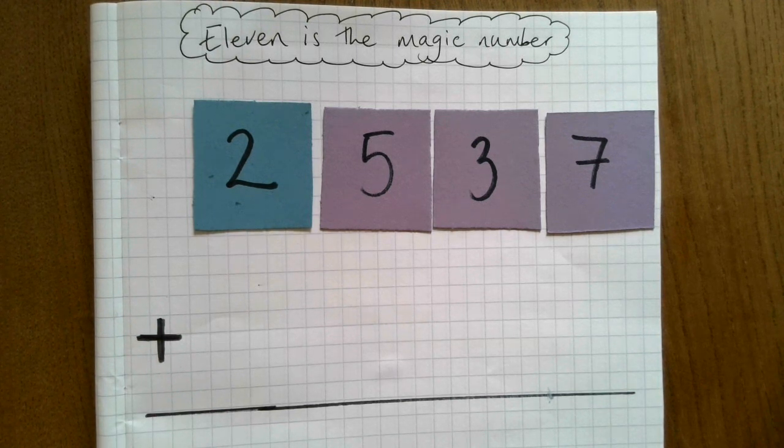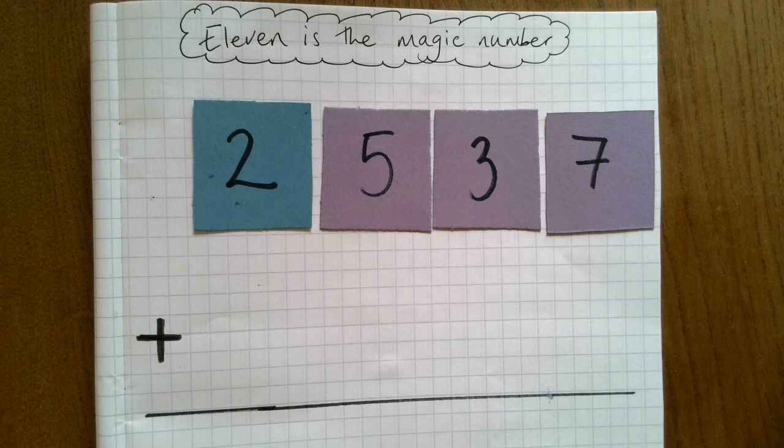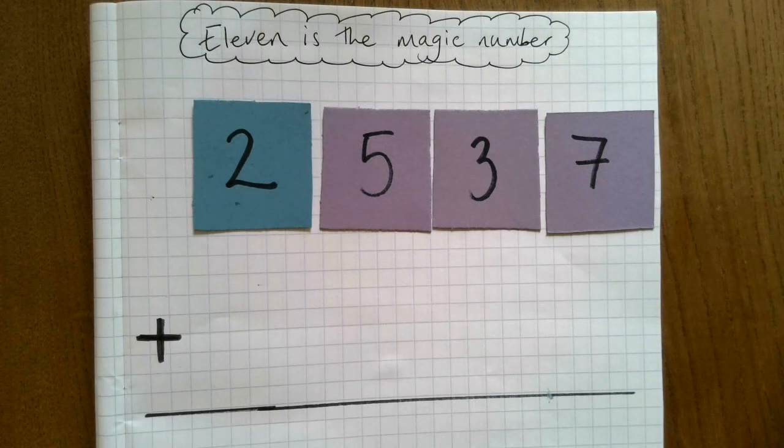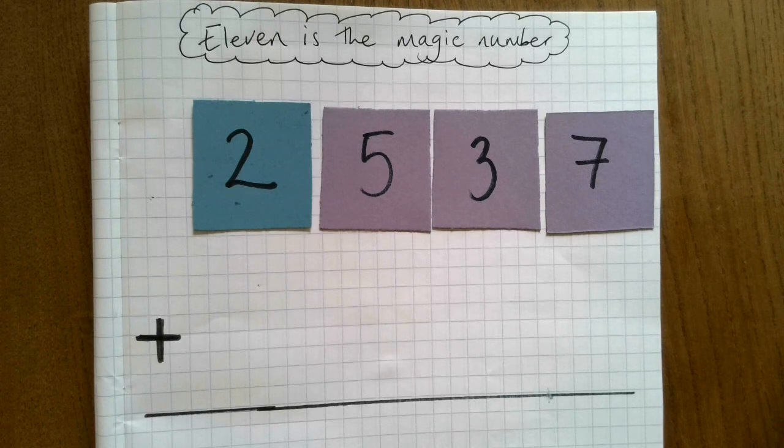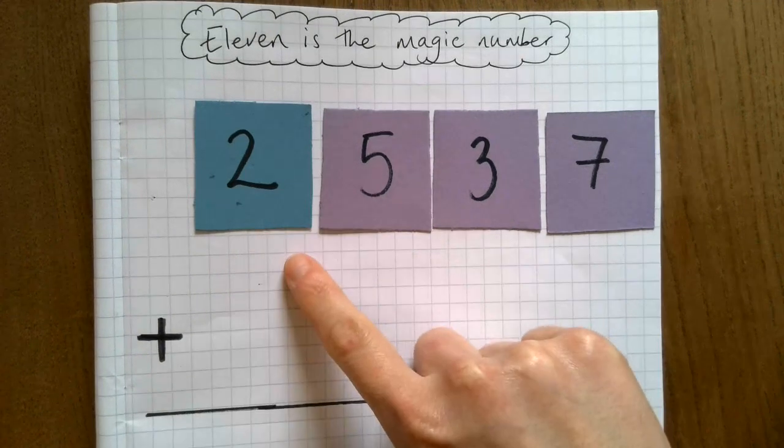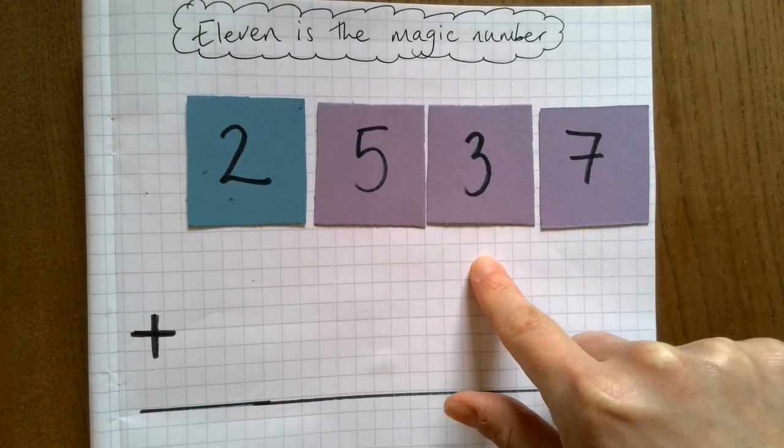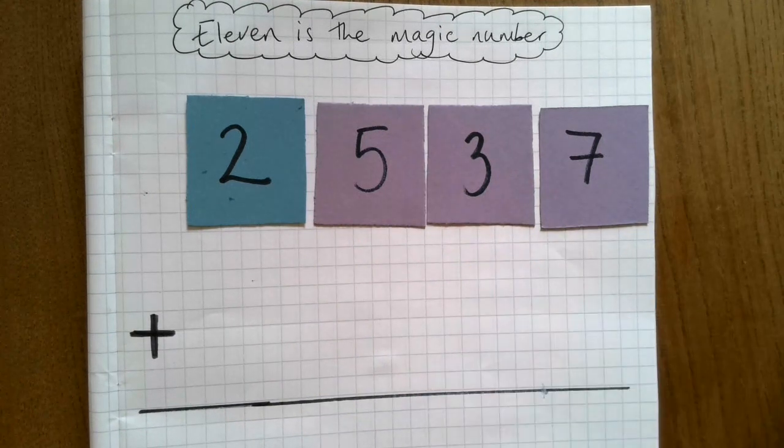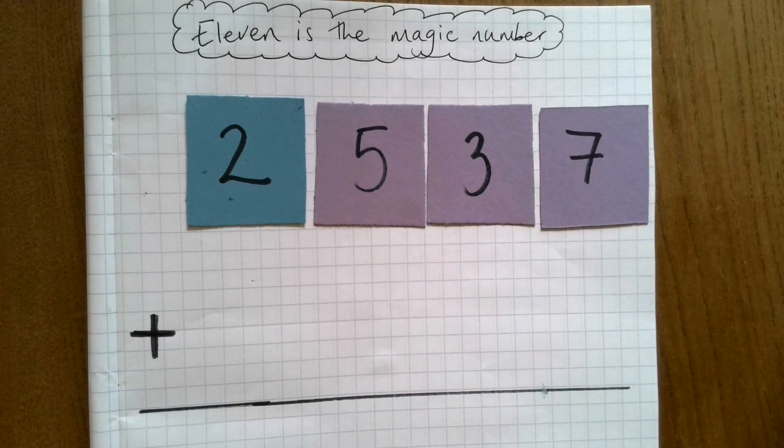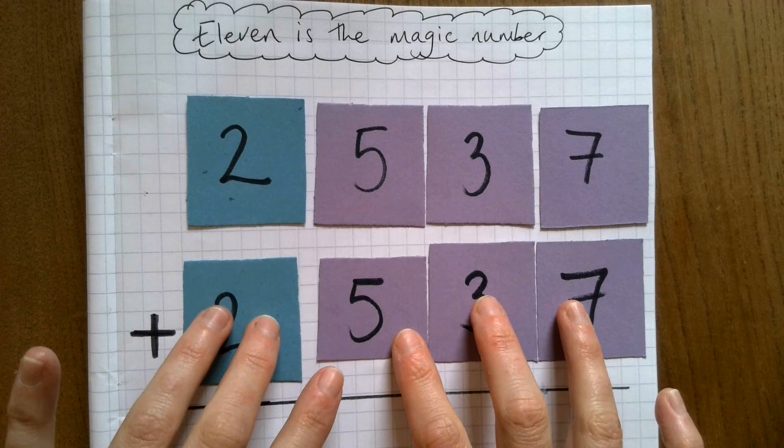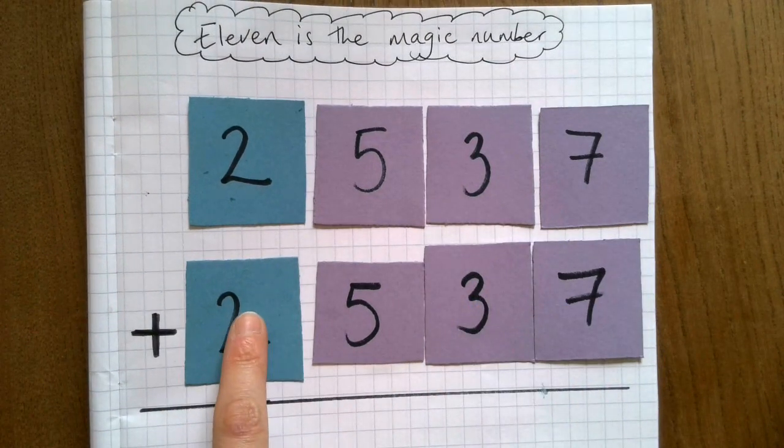Hi, so this task is called '11 is the magic number.' What you need to do is choose a four-digit number. I've chosen 2537. Then you need to take that number and shunt the first digit to the right-hand side, to the end of the number, and add these two four-digit numbers together.